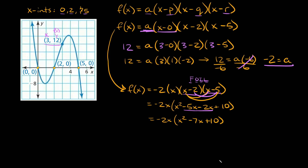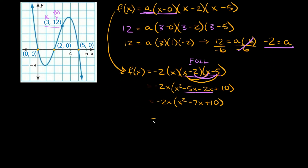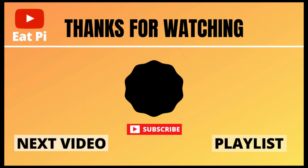Now we just distribute: negative 2x times x squared equals negative 2x cubed; negative 2x times negative 7x equals positive 14x squared; and negative 2x times positive 10 equals negative 20x. So here's our cubic — there's the three — and your final answer is f(x) = negative 2x cubed plus 14x squared minus 20x. If you found the video helpful leave a thumbs up, and if you have any questions just let me know in the comments below.